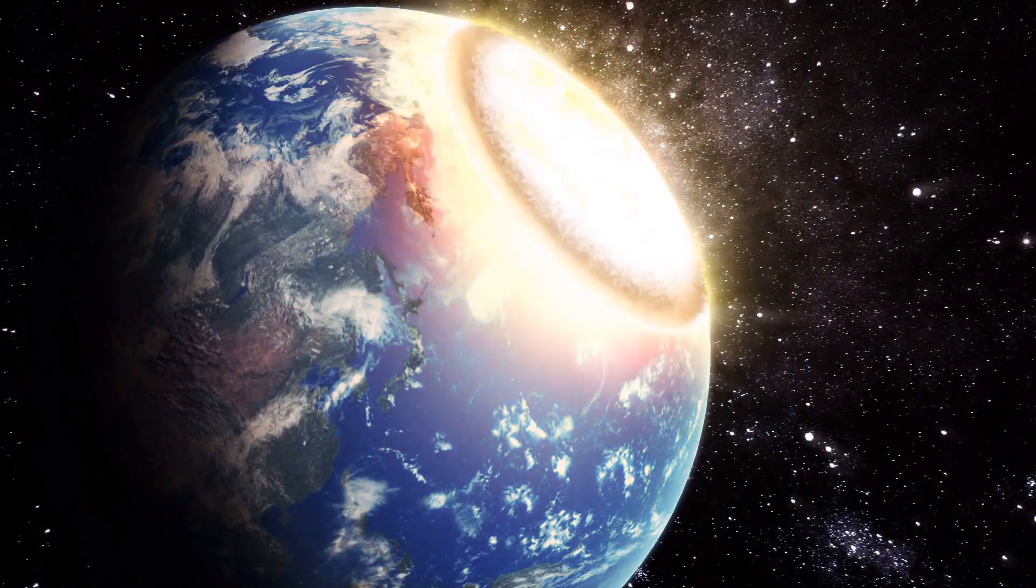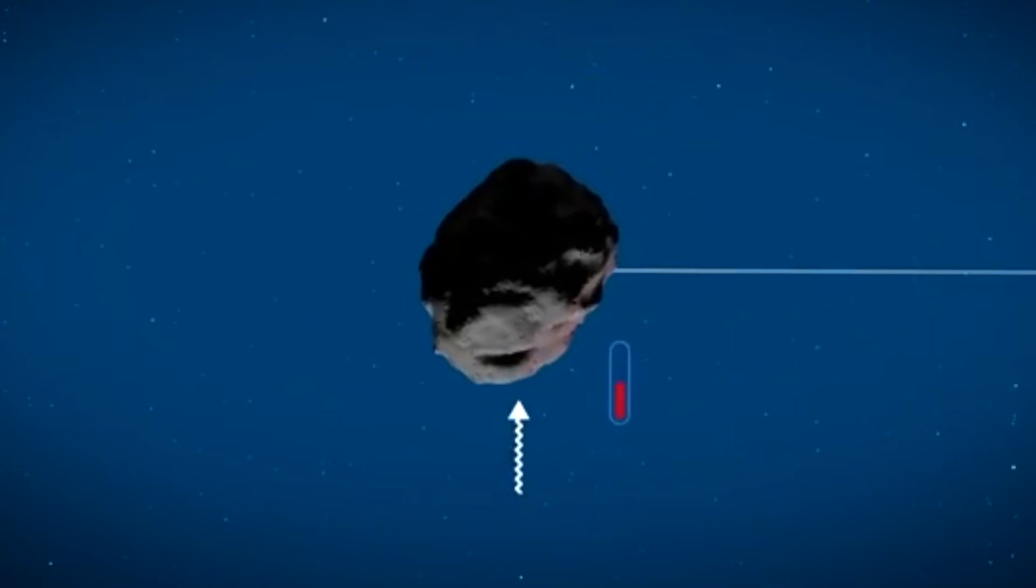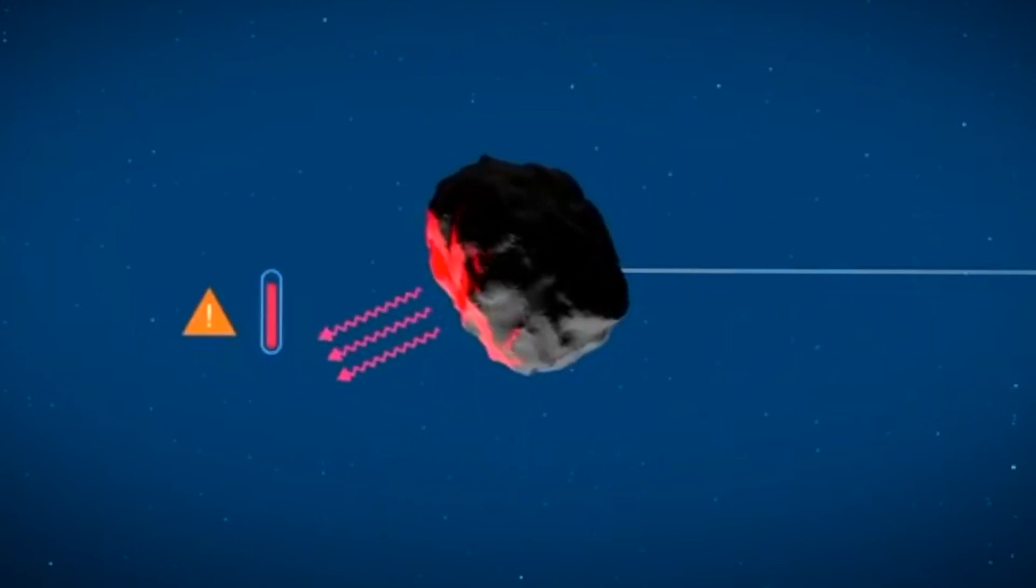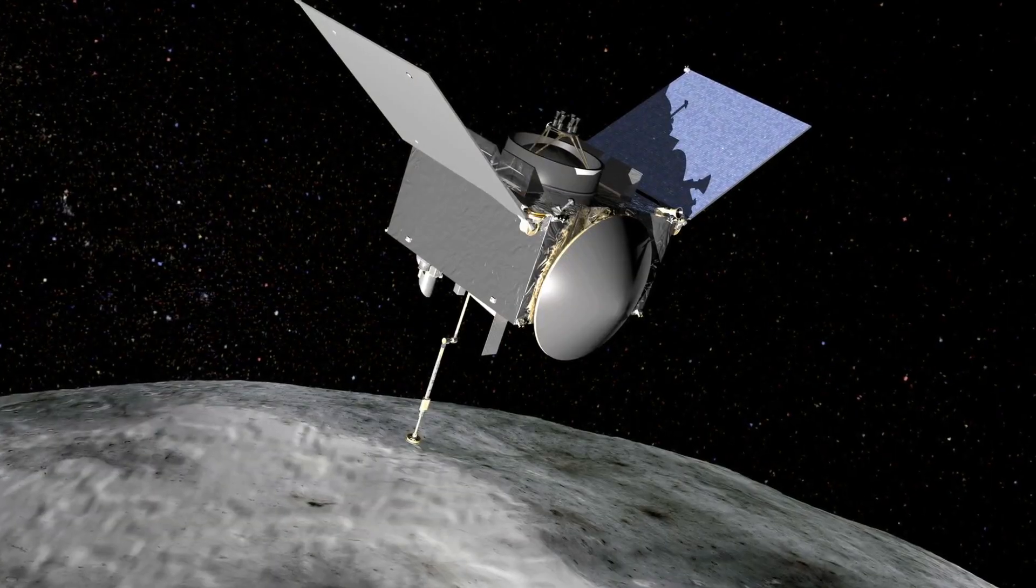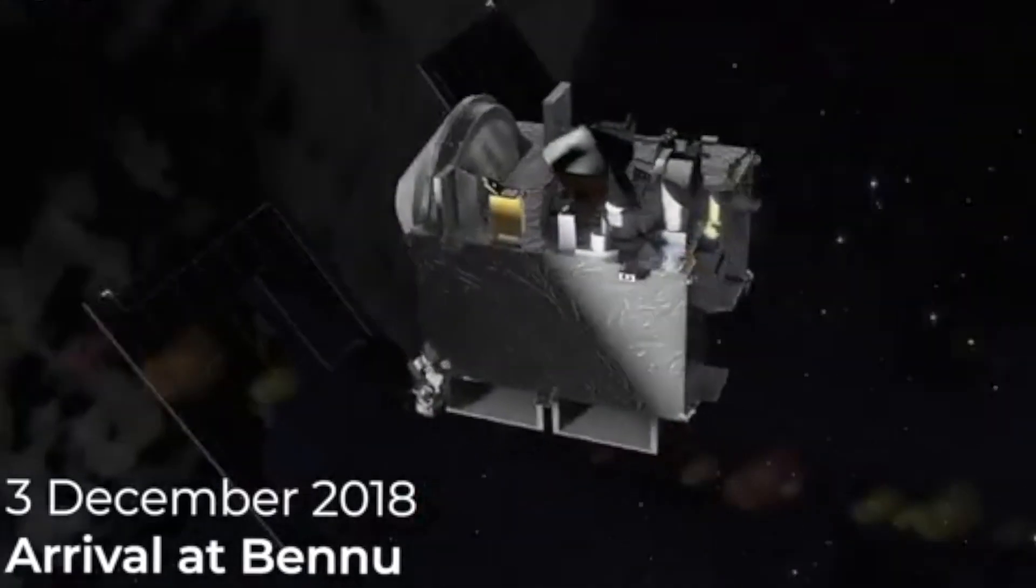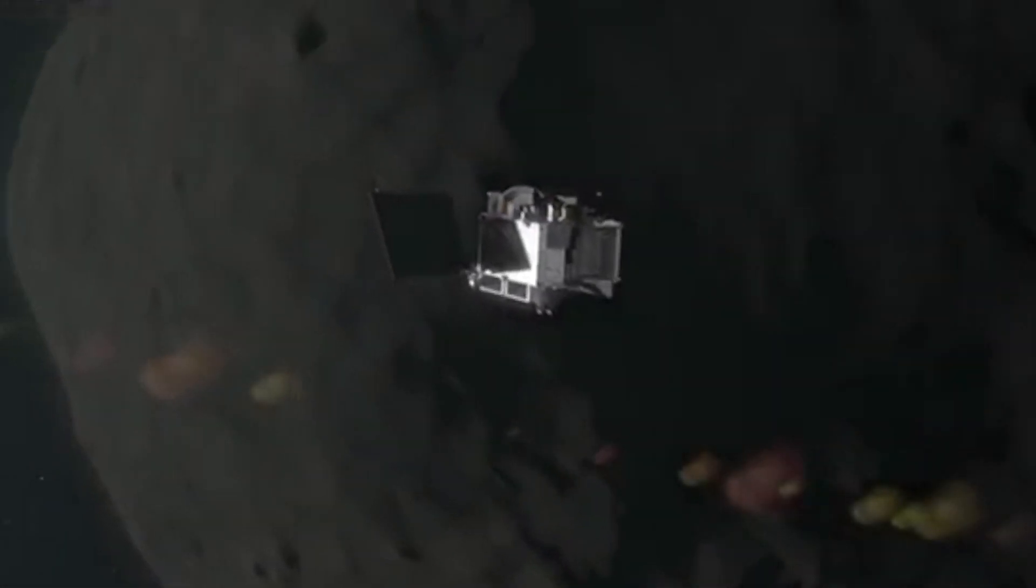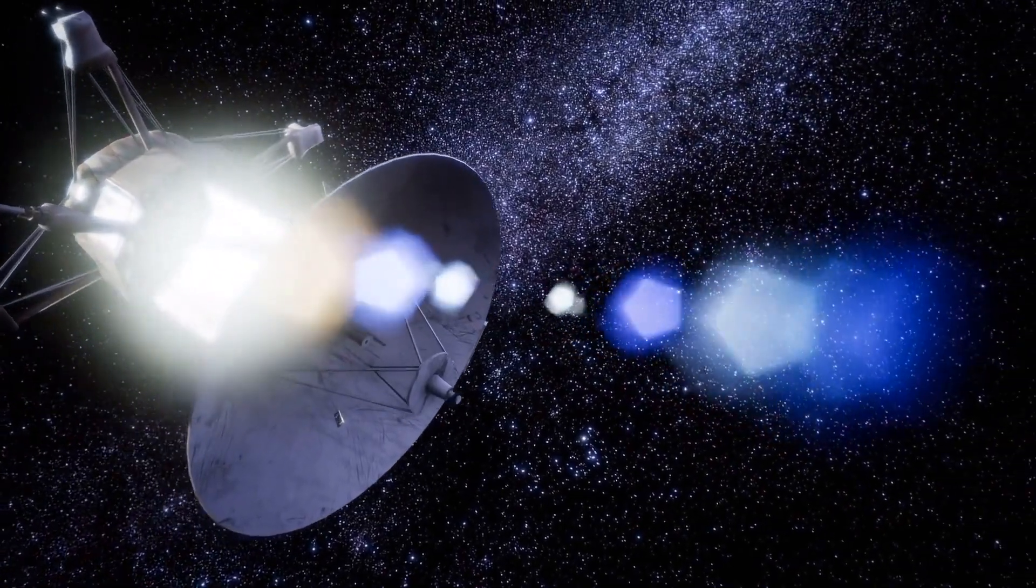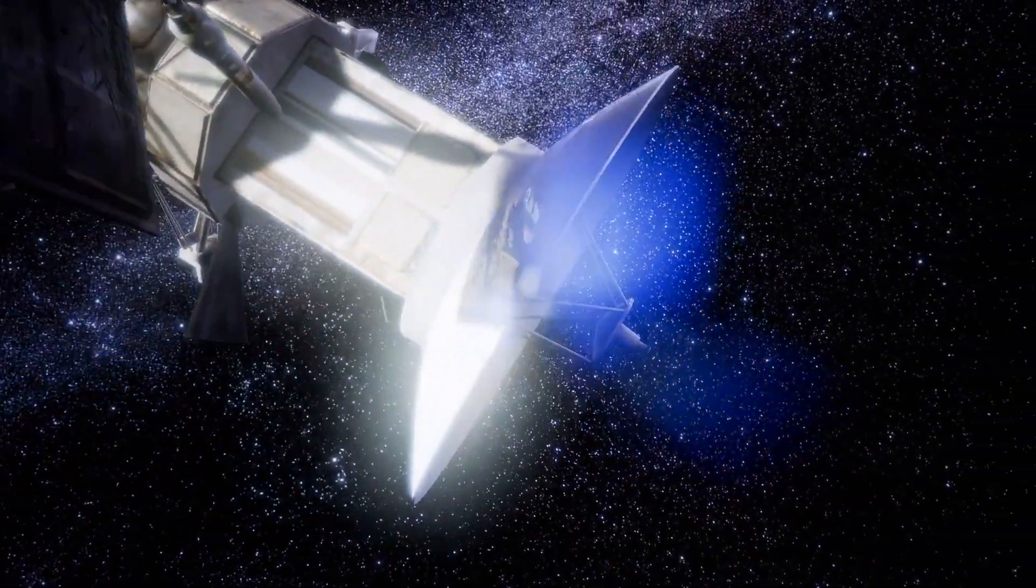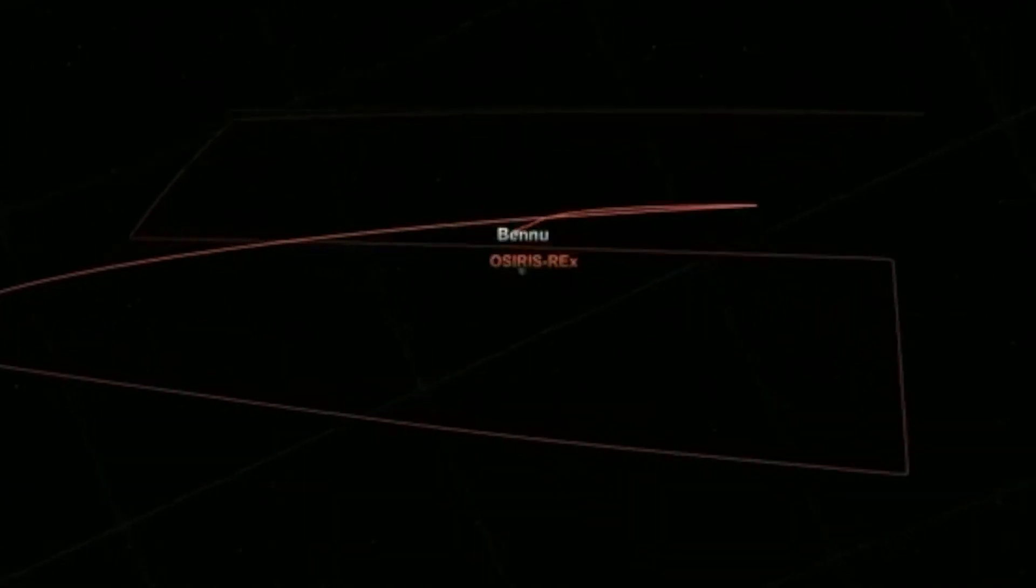The journey to Bennu was an arduous one, lasting two years and four months. On December 3, 2018, OSIRIS-REx arrived at its destination after traveling approximately 1.4 billion miles. The spacecraft entered orbit around Bennu and initiated a series of surveys and mapping activities to select the optimal site for sample collection.